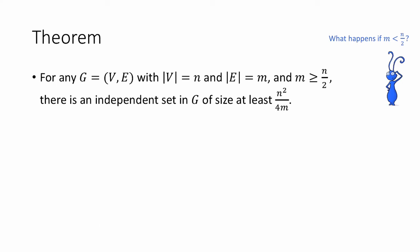Even if we can't efficiently find the size of the largest independent set, it turns out that using the probabilistic method, we can prove that for any graph with not too many edges, there must be a big independent set. More precisely, we have the following theorem: for any graph G with n vertices and m edges so that m is bigger than n over 2, there's an independent set in G of size at least n squared divided by 4m.